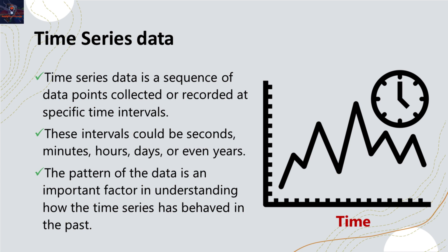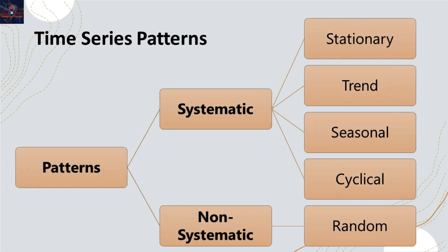We should always keep in mind that the pattern of the data is a key factor in this data modeling. In time series modeling, the pattern of data can be decomposed into two main components: systematic and non-systematic. A systematic component refers to a recognizable and recurring trend or behavior within the data that can be categorized into four main types: stationary, trend, seasonal, and cyclical. The non-systematic component refers to the random, unpredictable variations or noise present in the data that cannot be attributed to any identifiable pattern, trend, or seasonality.